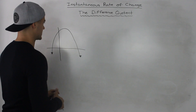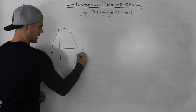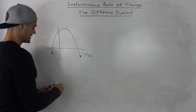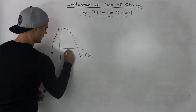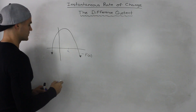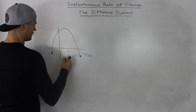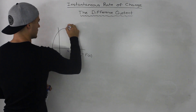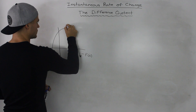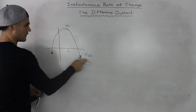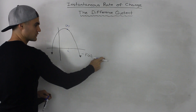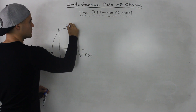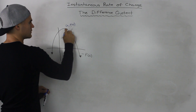So let's start off with a little example here. Let's say I have this function f of x, and I want to find the instantaneous rate of change at x is equal to a, some kind of x value. This point has an x value of a. If the function is f of x, the y value is going to be f of a at this point.